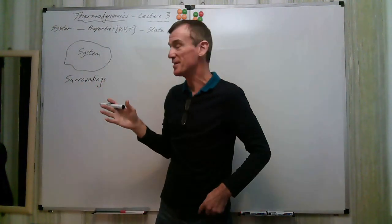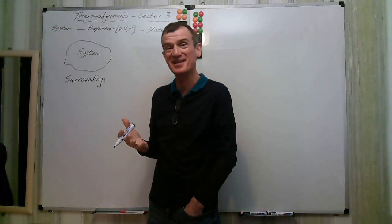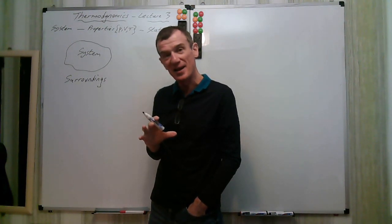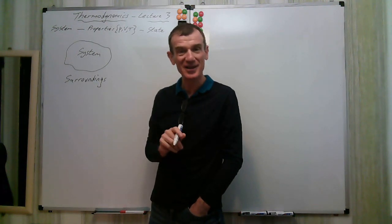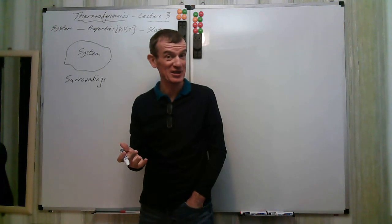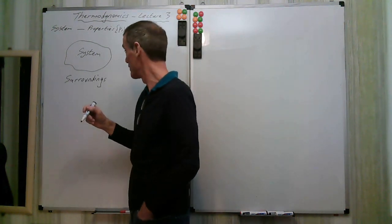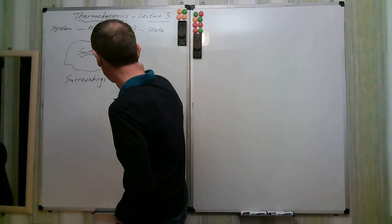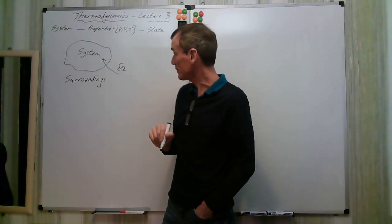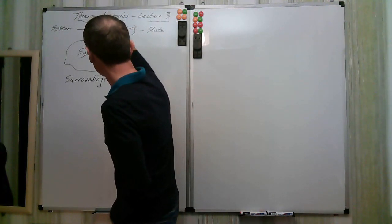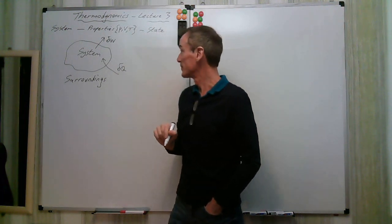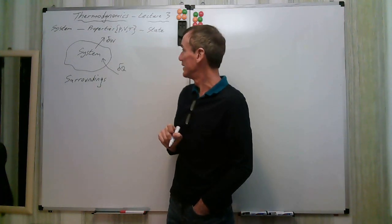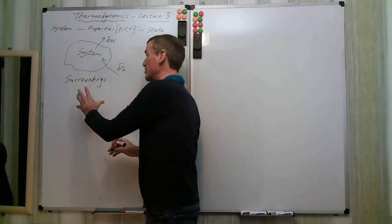That was the first lecture, where we were defining various things needed to get started on thermodynamics. In the second lecture, we looked at the interaction between the system and the surroundings and identified two forms of energy transfer: work and heat. For an infinitesimal amount of heat, we defined that as delta Q, and for work, delta W.